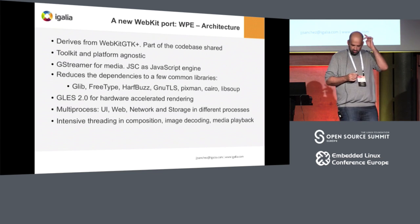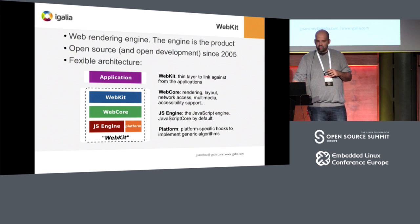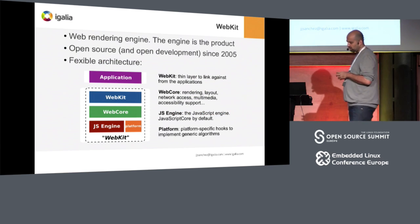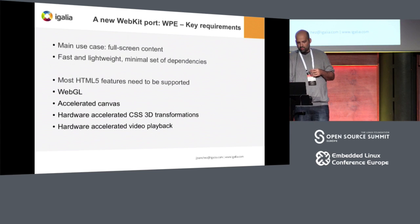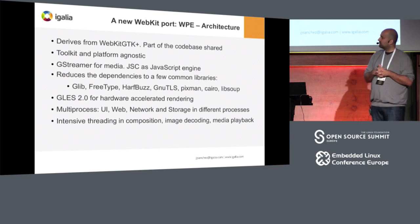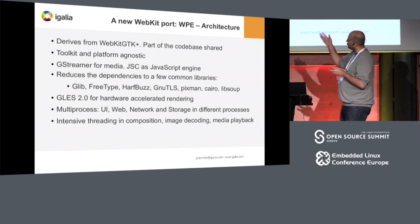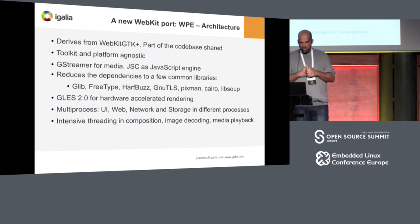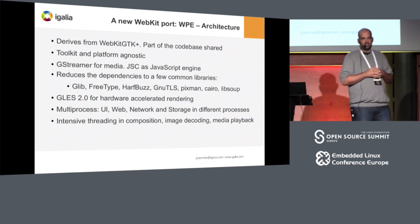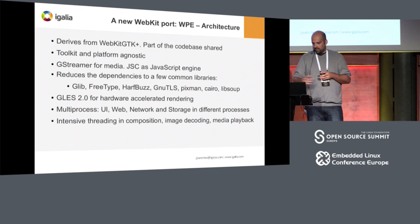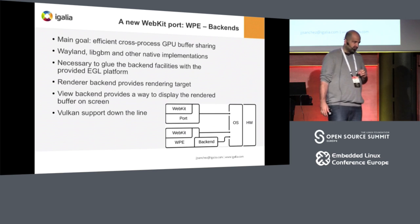The architecture is quite complex. The blue box hides a lot of complexity in terms of multi-threading. In our port we implement quite a lot of different processes and threads — for example, there is a process for the UI, a process for the web which takes care of rendering, one for the network, one for storage, and potentially more. There's also heavy use of threading for performance reasons in composition, image decoding, and media playback.